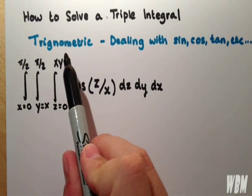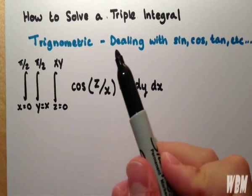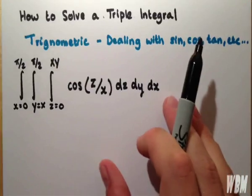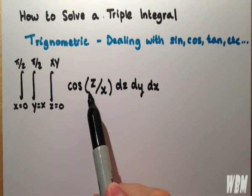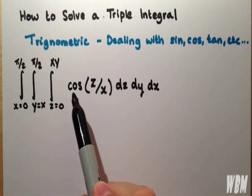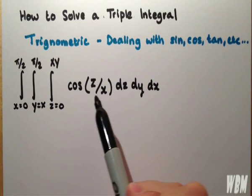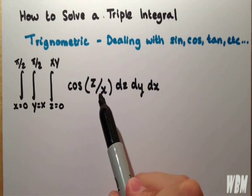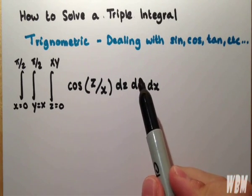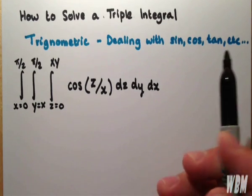The type we're looking at is trigonometric. Basically it means we're dealing with sine, cos, tan. As you can see, we've got cos in the equation here. So make sure you're familiar with your integrals and differentials for your sine, cos, tan, stuff like that.